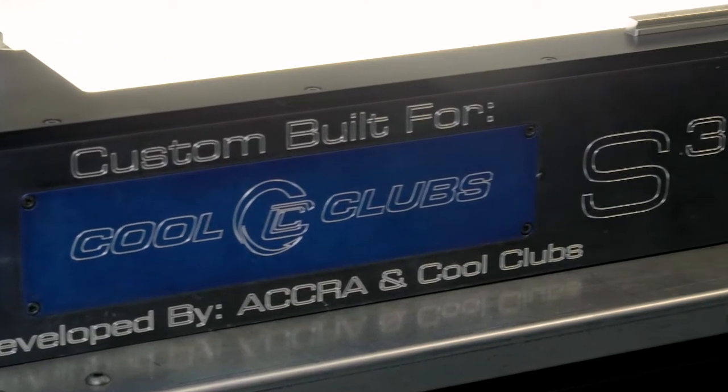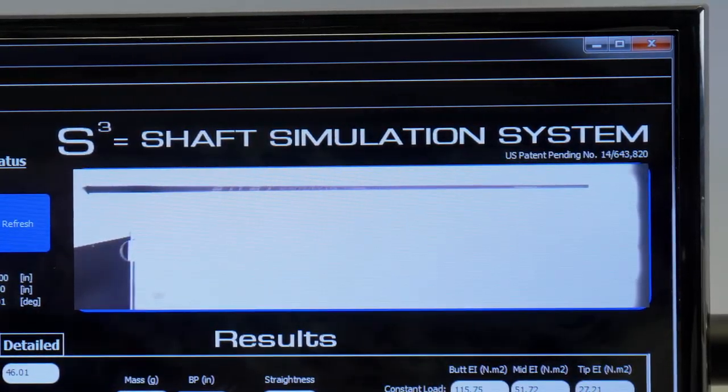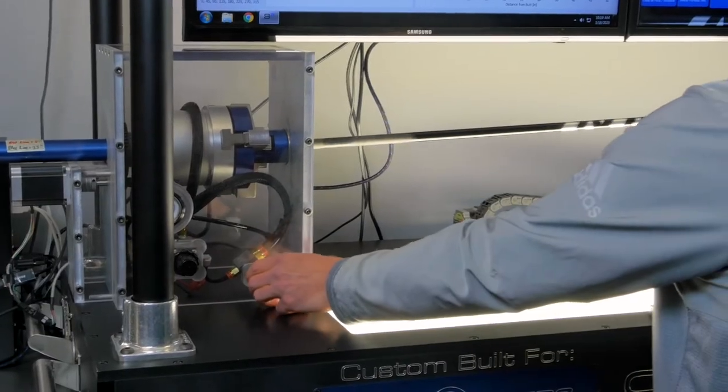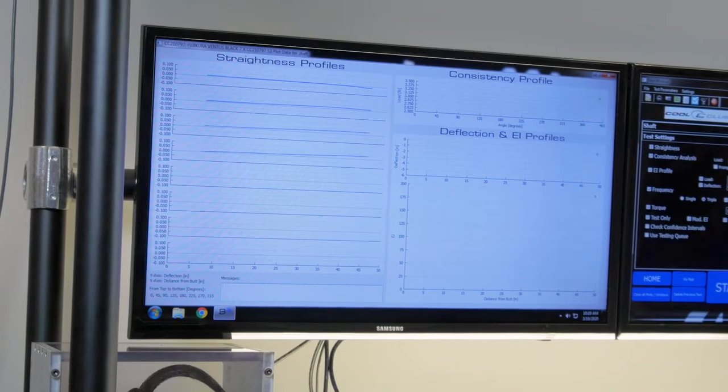Here's a great example. This machine is called the S3 machine, Shaft Simulation System. It simulates what happens when you swing a golf club, so we can understand what's going to happen when you swing that shaft. You put a shaft in and two and a half minutes kicks out over 100,000 pieces of data on a shaft.